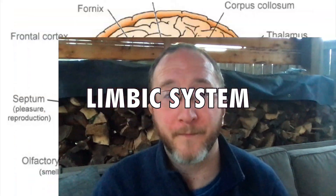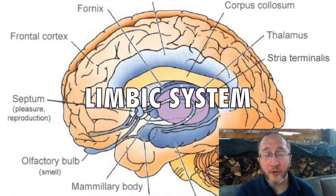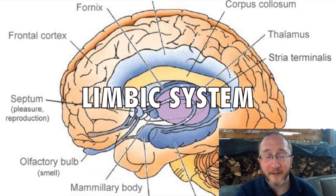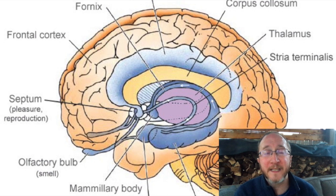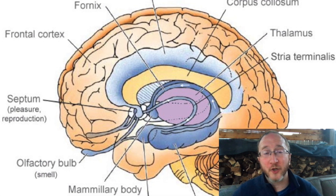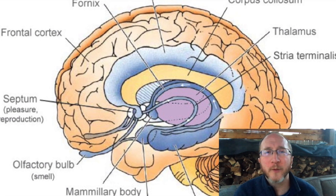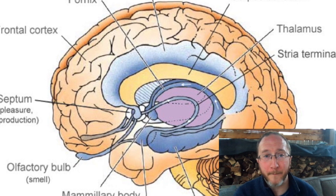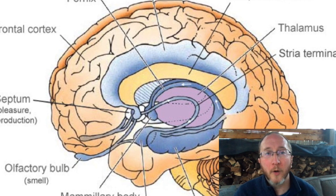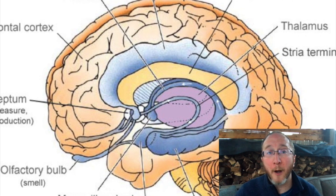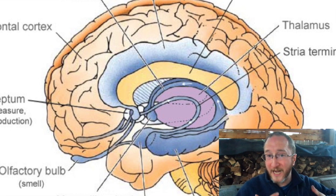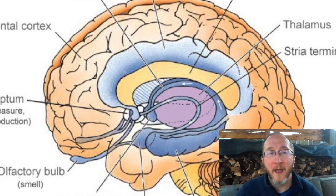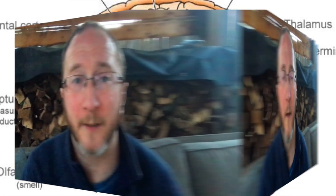The last subcortical structure I want to discuss is the limbic system — a structure deep inside the brain involved in emotion and memory. You may notice sometimes that a smell brings back a particular memory; that's encoded deep in the limbic system.